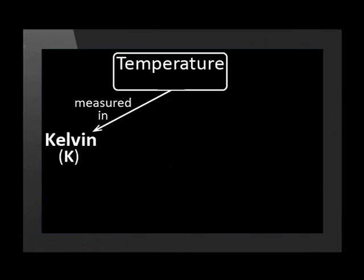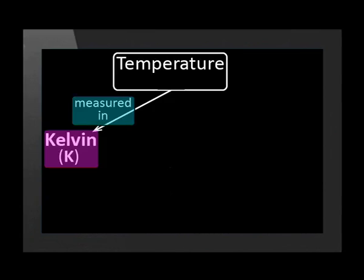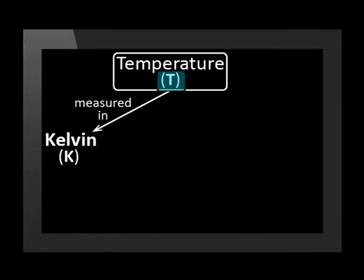This thermometer tells us the temperature of the gas in the unit Kelvin. In everyday life, we measure temperature in degrees Celsius. Scientists prefer to measure temperature in the unit Kelvin. We discuss this more in another lesson. The symbol for temperature is T. We want to understand what temperature means at a microscopic level. So let's increase the gas's temperature and watch what happens.